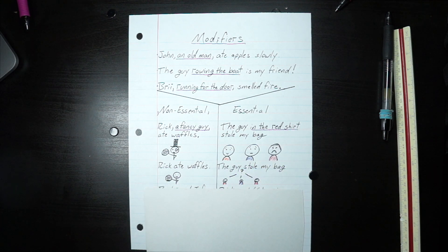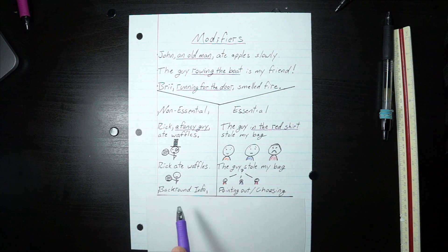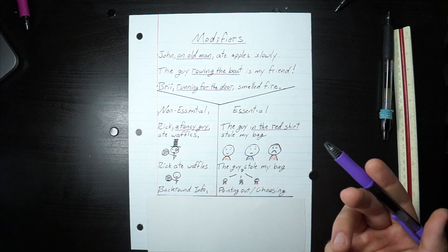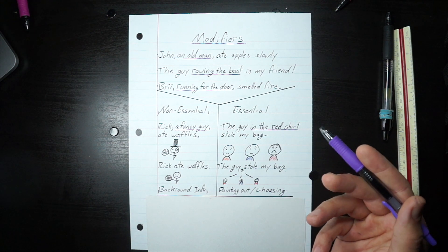Another way to think of non-essential and essential, non-essential is mostly background information that kind of makes the sentence more rich. And essential is more pointing out or choosing which person it is or which thing it is.